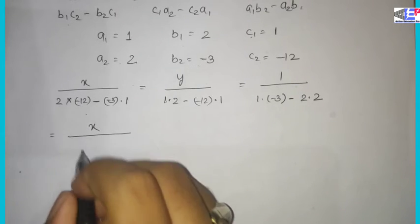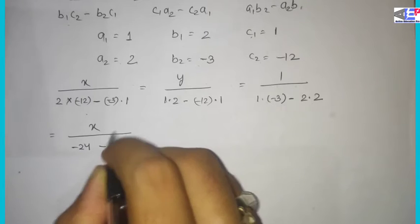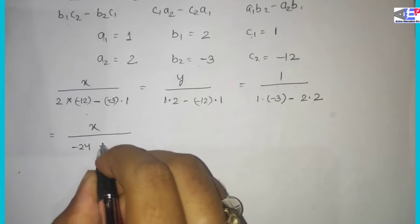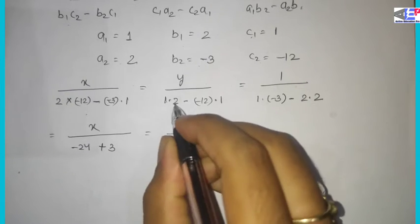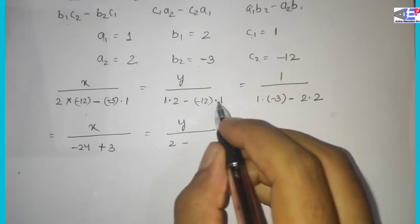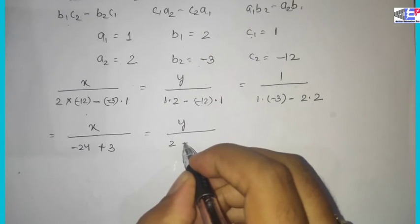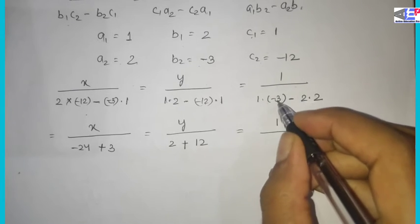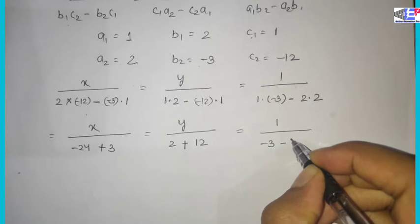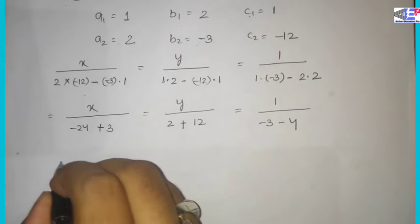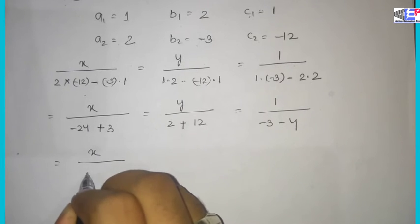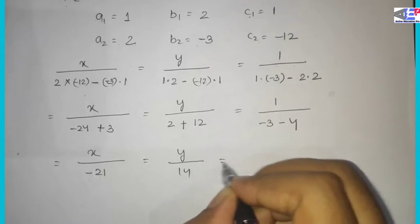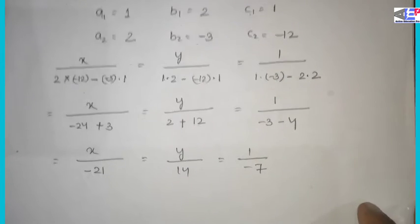Now we solve: 2 into minus 12 gives minus 24, minus 1 into minus 3 gives plus 3, so x numerator is minus 21. For y: 1 into 2 is 2, minus minus 12 into 1 is plus 12, so y numerator is 14. The denominator is 1 into minus 3 minus 2 into 2, giving minus 7.